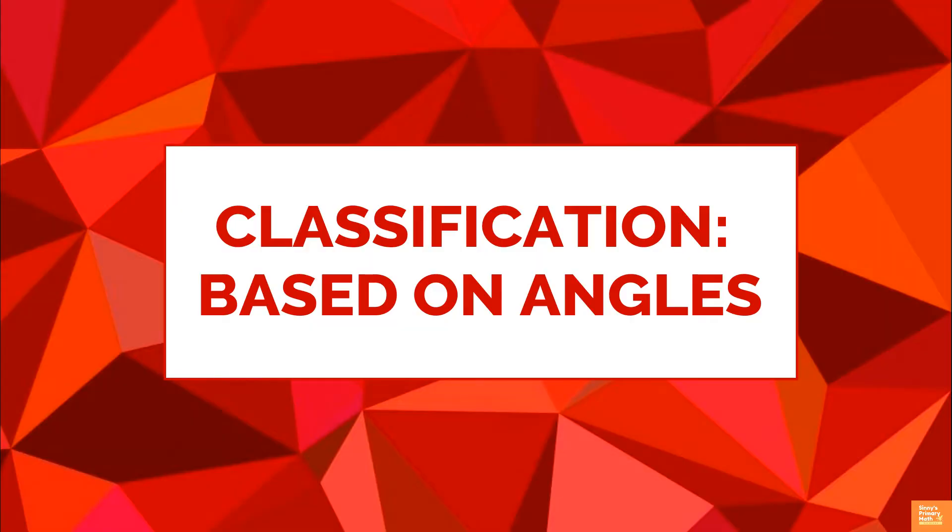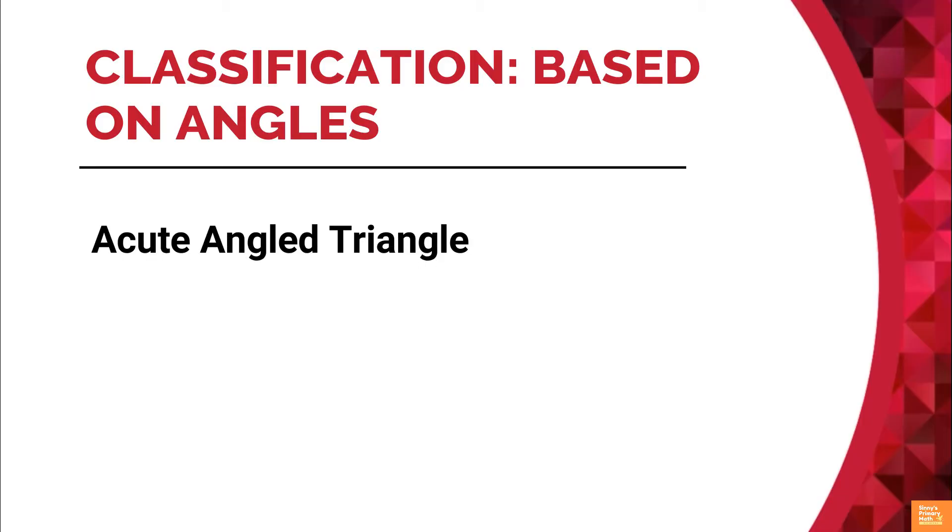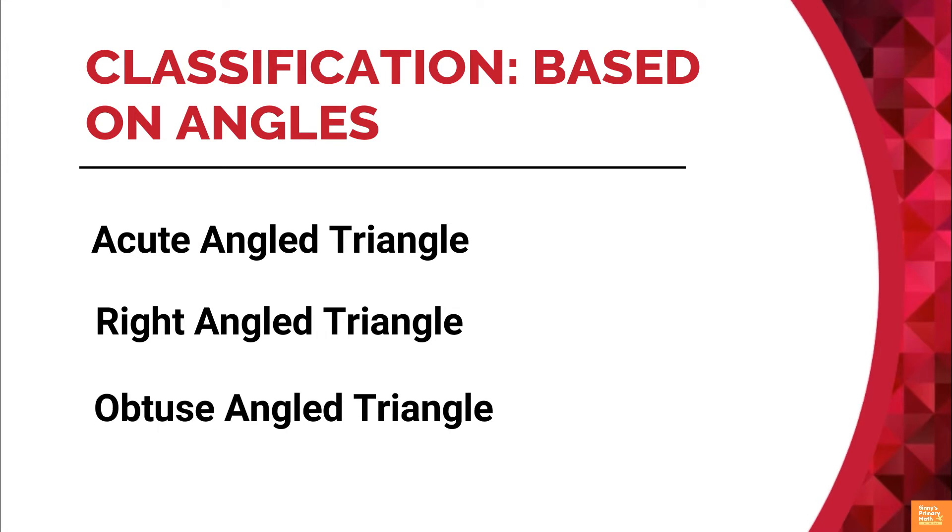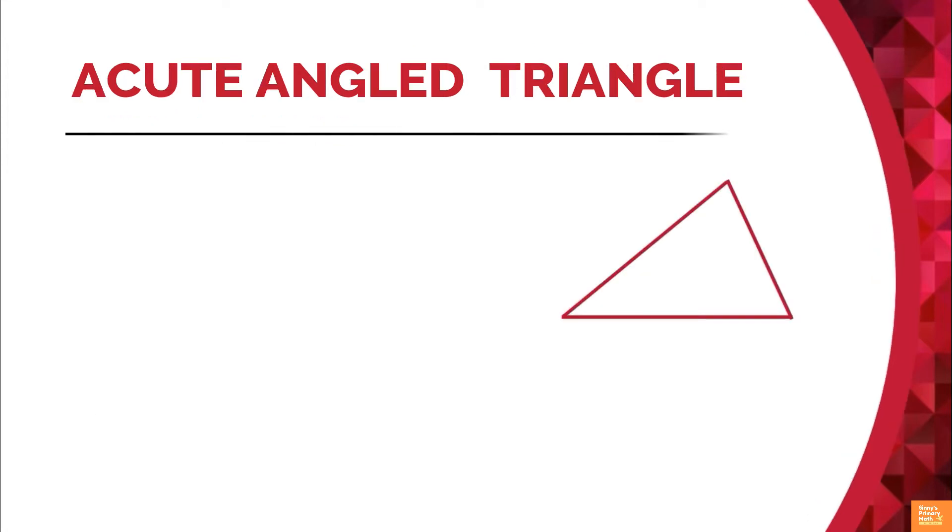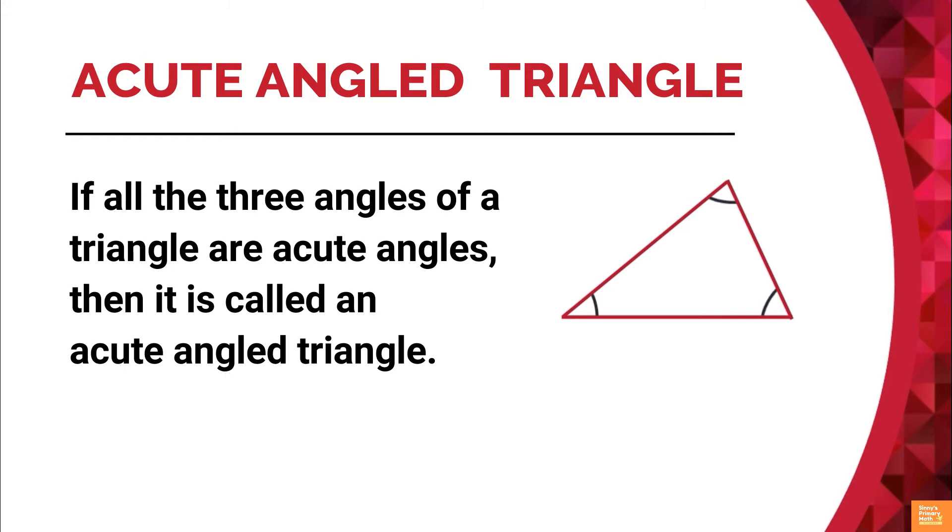Next, classification based on angles. There are three different classifications for triangles based on their angles: acute angle triangle, right angle triangle, and obtuse angle triangle. If all the three angles of a triangle are acute angles, then it is called an acute angle triangle.